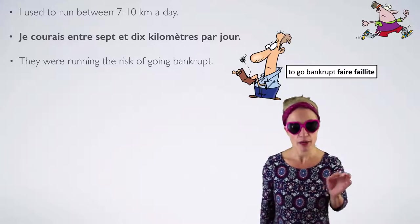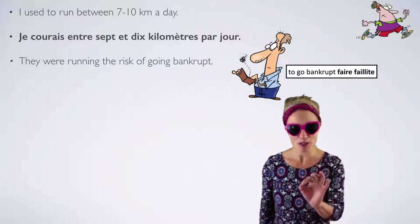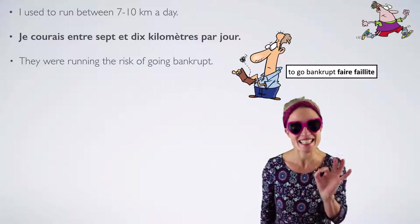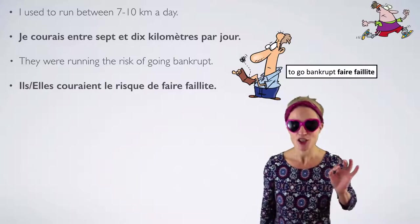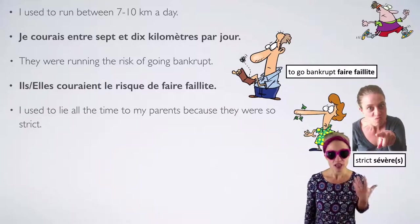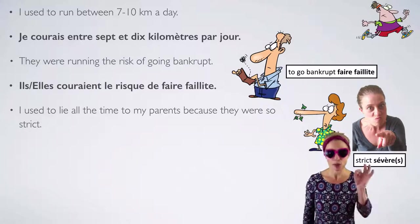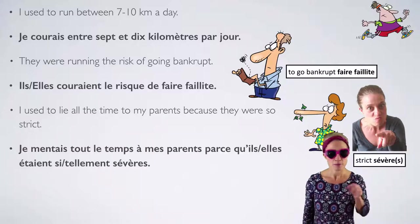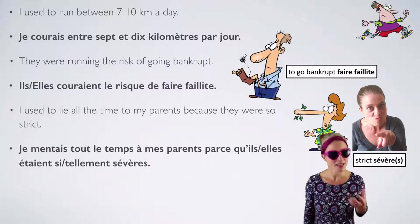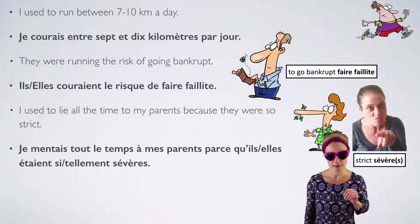'They were running the risk of going bankrupt.' To go bankrupt, we use 'faire' in French — faire faillite. You can't hear any L's: faire faillite. 'I used to lie all the time to my parents because they were so strict.' The word 'strict' does exist, but you will hear a lot more 'sévère' — for strict, sévère, to be severe. Je mentais tout le temps à mes parents parce qu'ils étaient si sévères. 'Tout le temps' — when spoken quickly it sounds like 'tout l'temps.'